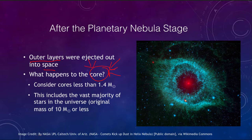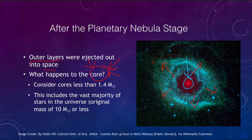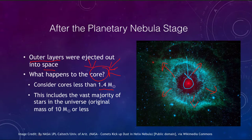Last time we concentrated on the outer layers being expelled out into space, as they could no longer be held on to by the gravity of the star. However, there is also the section at the center — the core left behind — and we want to see what that is going to be like. The first thing we want to consider is cores that are less than 1.4 times the mass of the Sun.